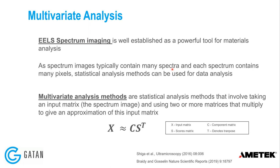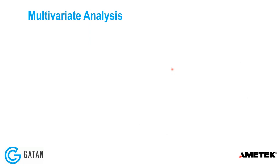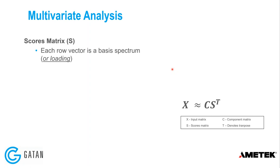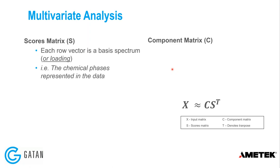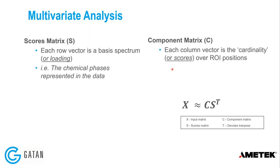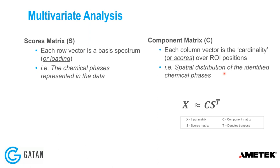This is an abstract concept, so I'll keep the description hands-on rather than going deep into the math of PCA. In the scores matrix, each row vector is a basis spectrum, or what we call a loading, representing a chemical phase in the data. The component matrix C — each column vector is the cardinality, or scores over ROI positions — tells us the spatial distribution of the identified chemical phases. So S tells us what we have, and C tells us how those components are distributed around our sample.